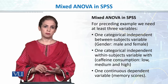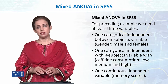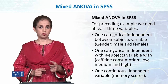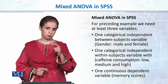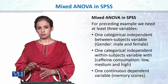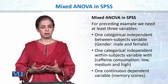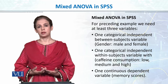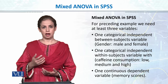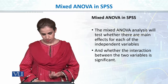In ANOVA, the independent variables are always categorical — they represent groups — and the dependent variable is continuous. In this example, gender is our between-group independent variable with levels male and female. Caffeine level is the within-group independent variable with 3 levels. Our dependent variable is a memory test score, measured after each caffeine condition: low, medium, and high.